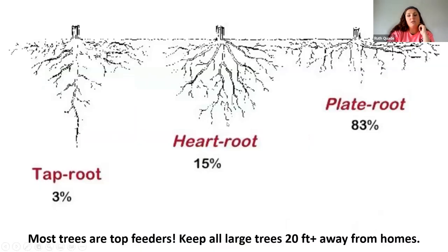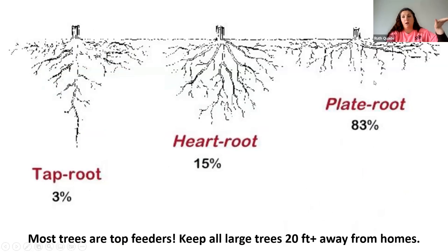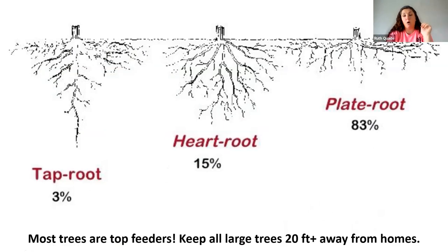Only 3% of trees have a tap root. Most, if not all, have a plate root, which wants to come up. If you're not watering trees properly, they'll really come up to find water. If you don't want that in your lawn, by your patio, or if you don't want to trip over a root, think carefully about the trees you put in.